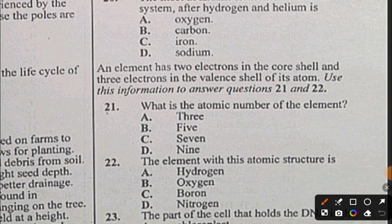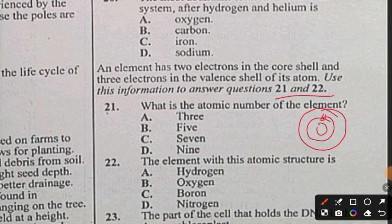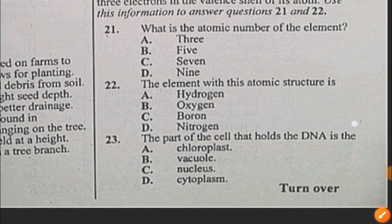Preamble: An element has two electrons in the core shell and three electrons in the valence shell of its atom. Use this information to answer questions 21 and 22. So this is the core with two electrons, and then the valence electrons are three. Question 21: What's the atomic number? The atomic number is five, so 21 is B. Question 22: The element with this atomic structure is boron. We see boron, so the answer is boron.